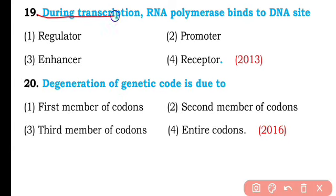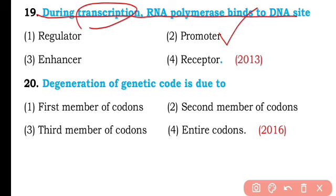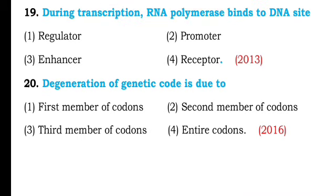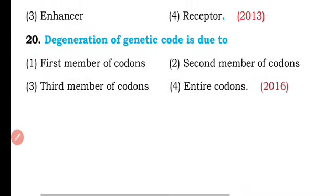Question number nineteen. During transcription, RNA polymerase binds to a DNA site. That site is called: regulator, promoter, enhancer, or receptor? So the correct answer is option two — during transcription, RNA polymerase binds to the promoter region of DNA.